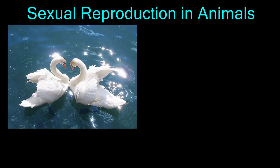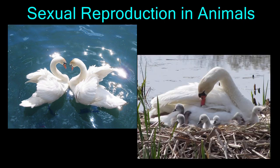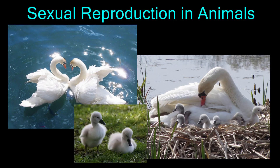As you know, sexual reproduction involves two parents, each contributing half of their genetic material to their offspring. The advantage to sexual reproduction is that each individual offspring is genetically different from the others and from the parents.